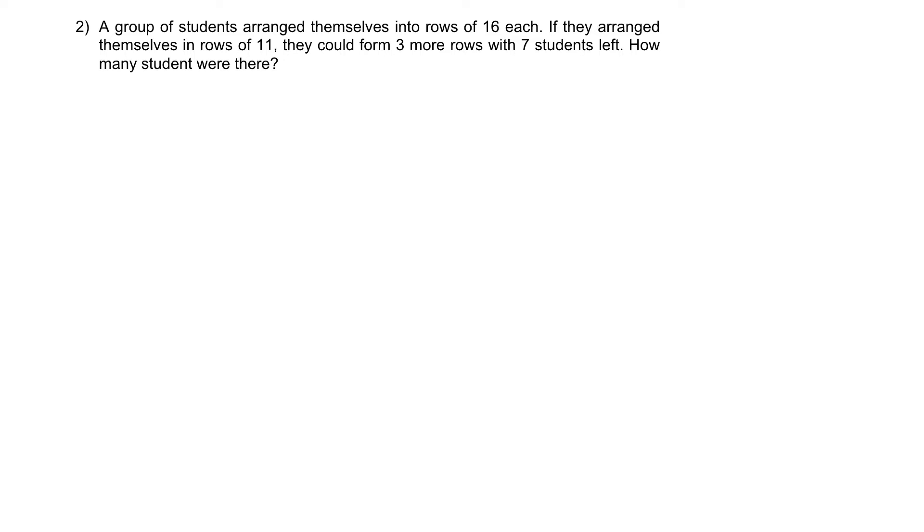Question 2, this is a fairly common question. A group of students arrange themselves into rows of 16 each. That means every row there are 16 students. If they arrange themselves in rows of 11, they could form three more rows with seven students left. How many students were there?